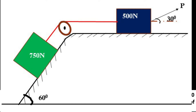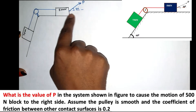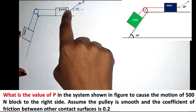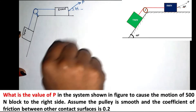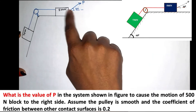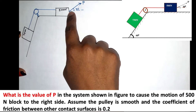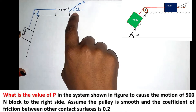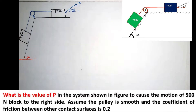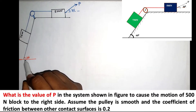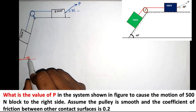The force P is the magnitude of the applied force. P is inclined from the horizontal direction. The horizontal angle is 60 degrees, so we have to solve this problem involving friction.